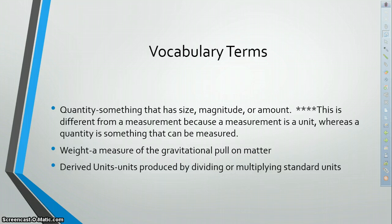Then there are derived units. Derived units are produced by dividing or multiplying standard units. For example, when we find area, we multiply a length times a width, so we have meters times meters. So we're multiplying units. Those are derived units.